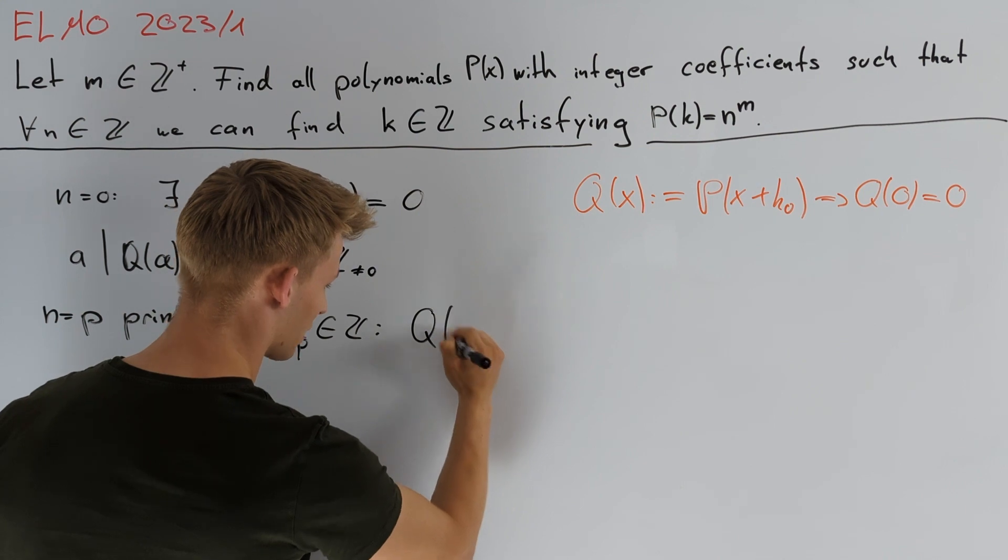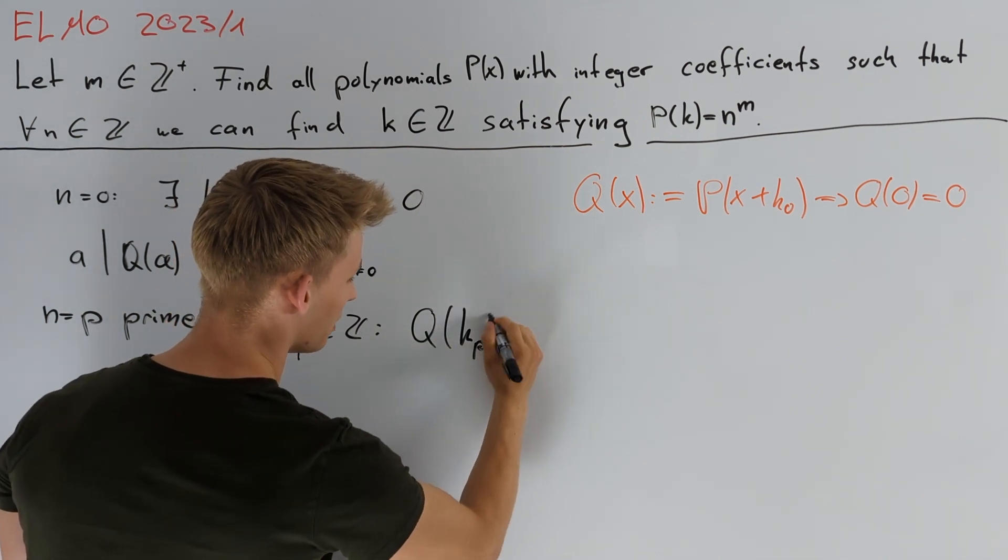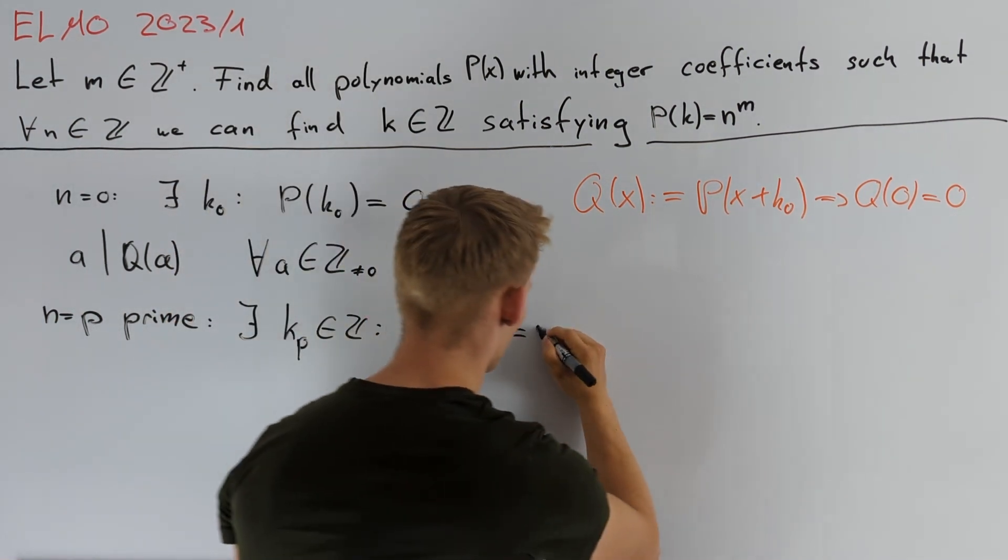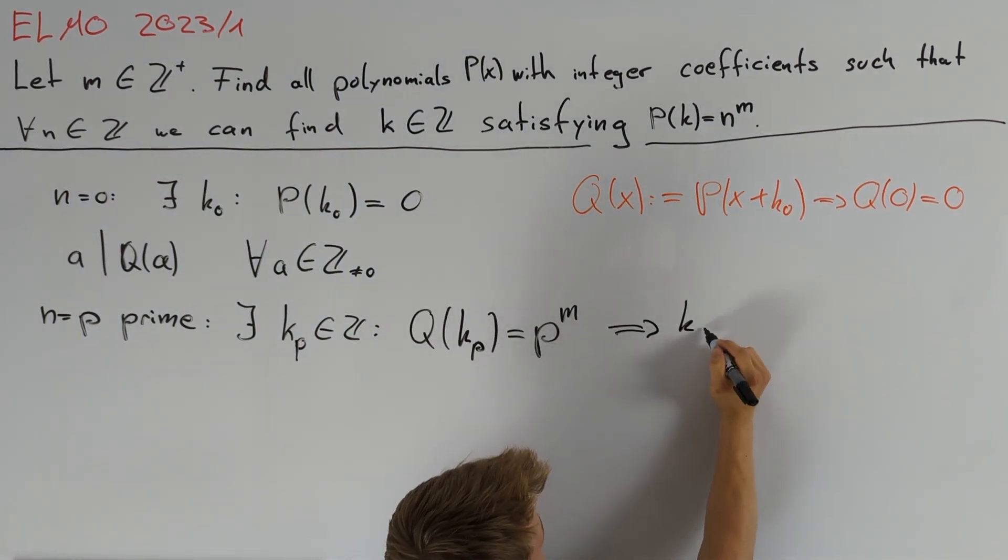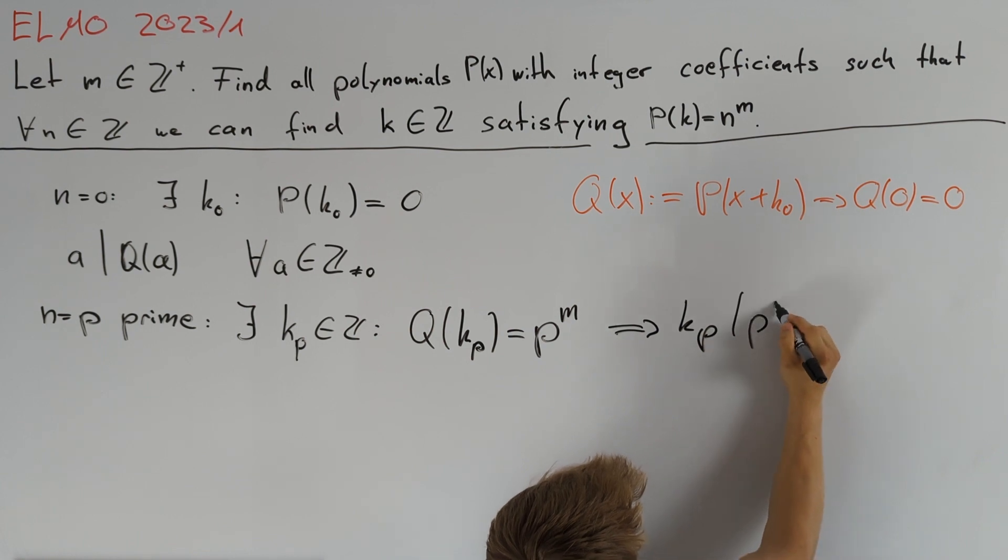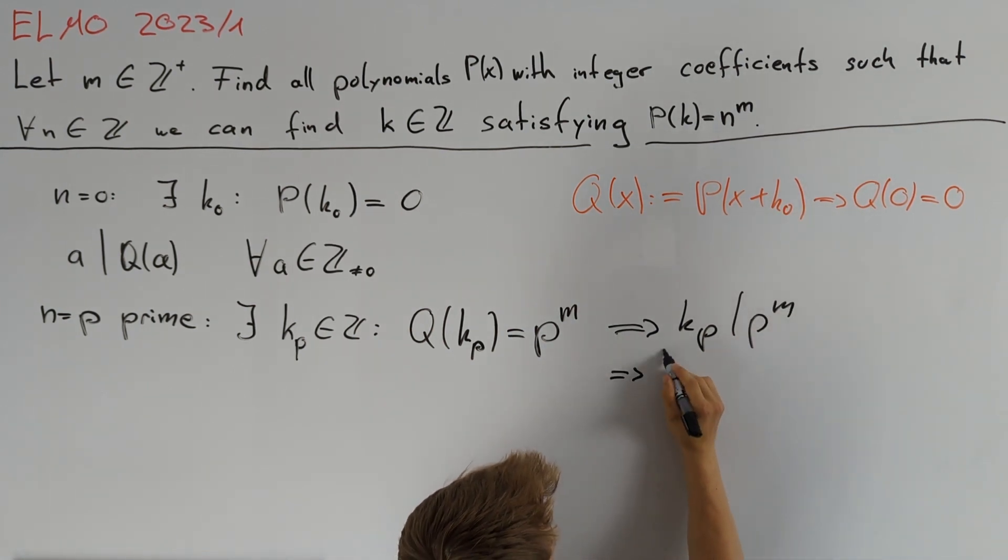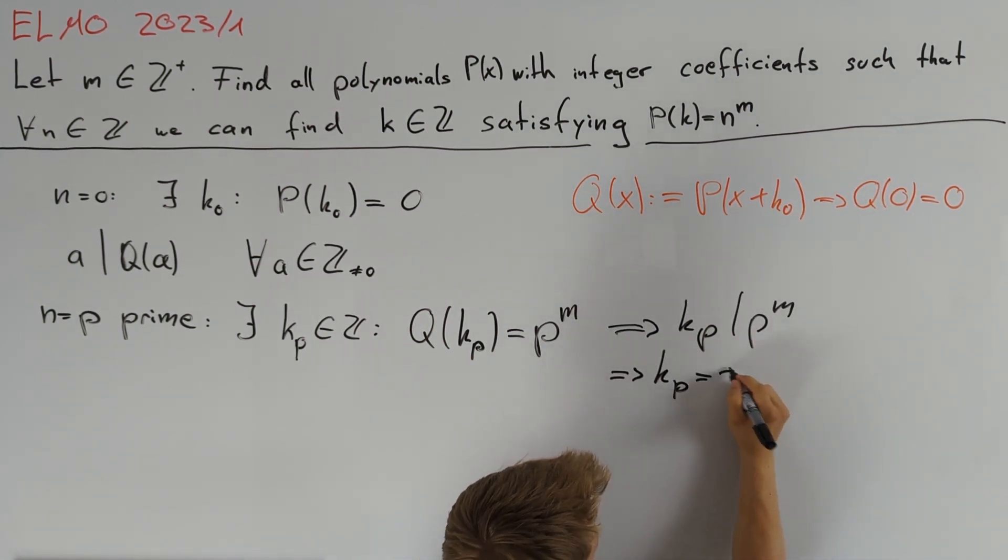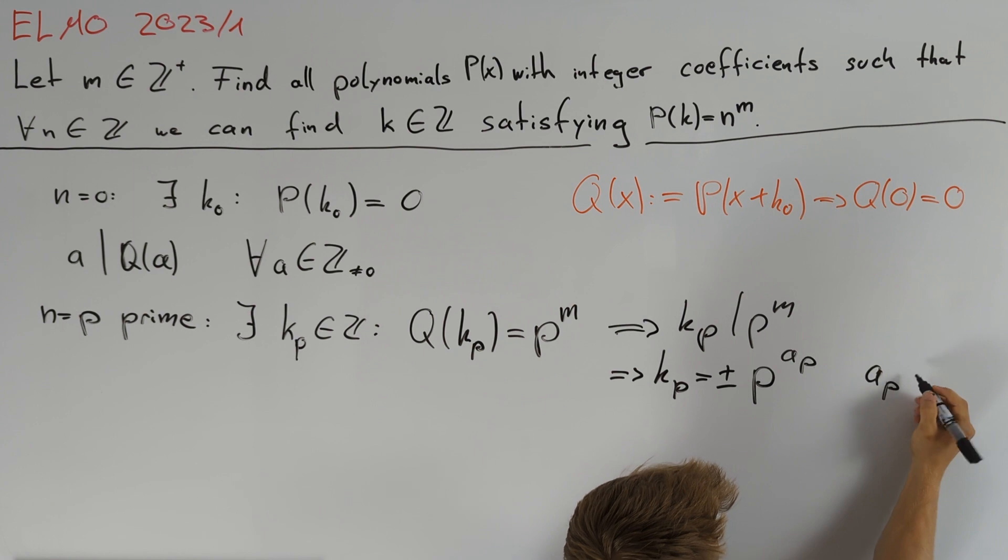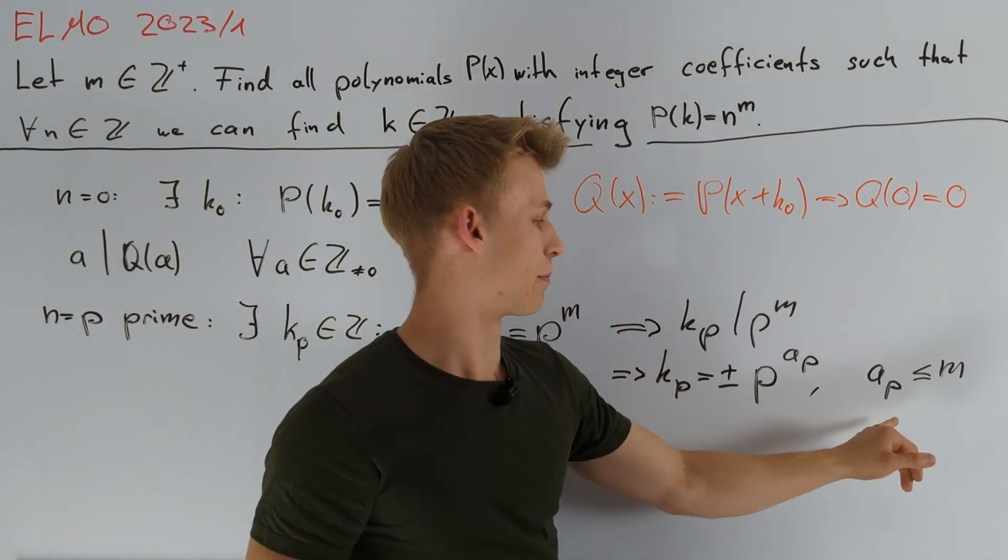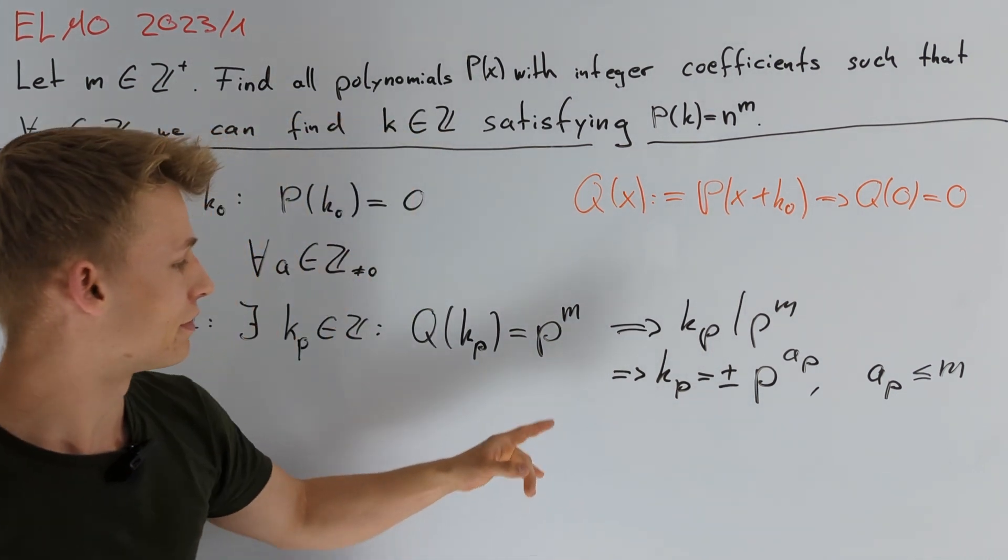Or kₚ equals plus minus p to the power of aₚ for some aₚ less than or equal to m. Since aₚ is bounded from above by m and since there are infinitely many primes p...